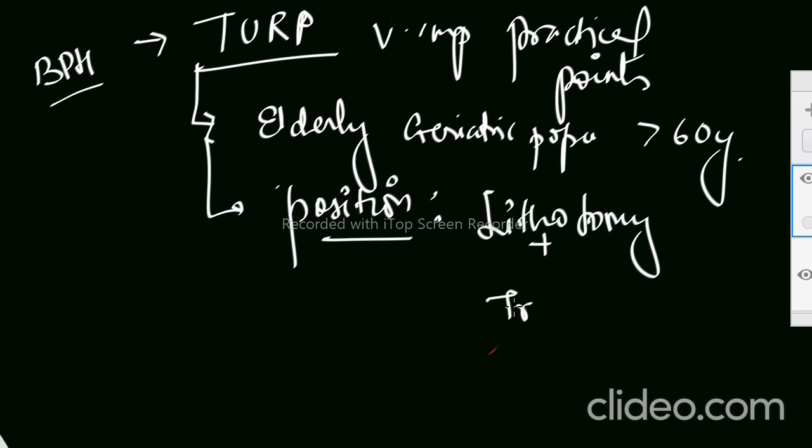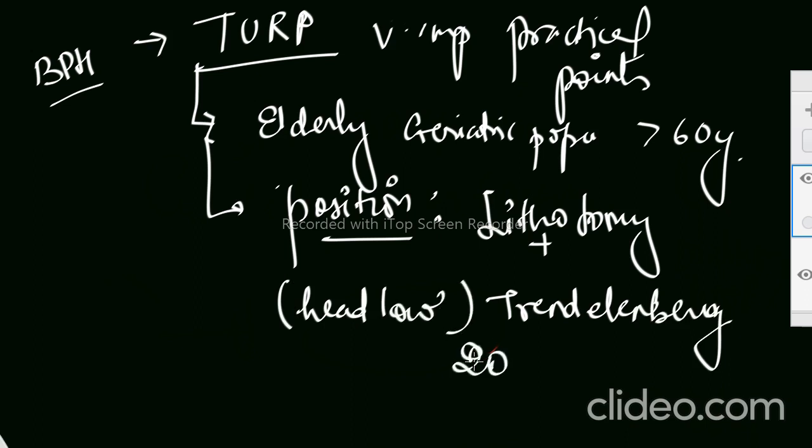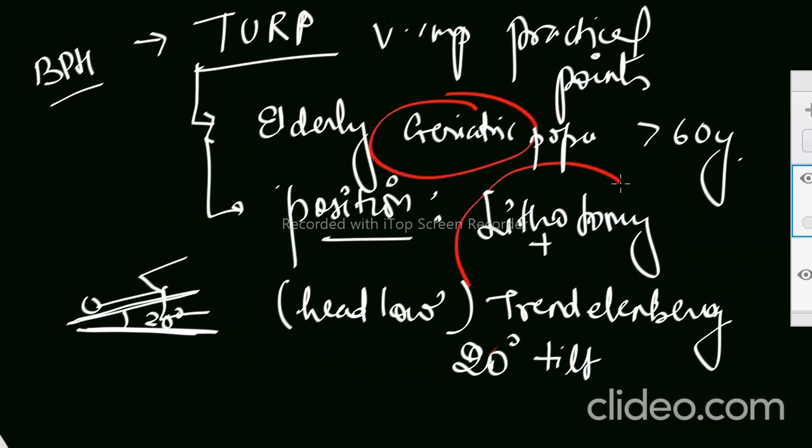Lithotomy with slight Trendelenburg. What is Trendelenburg? Trendelenburg is head low. So we give around a 20 degree tilt. So our OT table is this and we will give slightly 20 degree tilt. This will be our patient in lithotomy position. So anesthetic considerations will be related to first, the geriatric population, and next is the position, lithotomy and Trendelenburg.